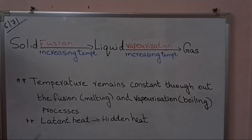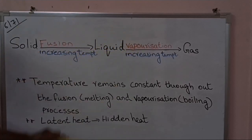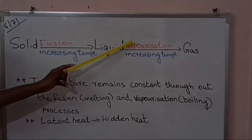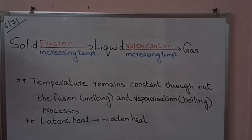That hidden heat is called latent heat. In the case of fusion, it is called latent heat of fusion, and in vaporization, it is called latent heat of vaporization. In the fusion of ice, the temperature remains constant at 0 degrees Celsius and the supplied heat is used to overcome the force of attraction between ice particles to change into water. In vaporization, the temperature remains constant at 100 degrees Celsius because the supplied heat overcomes the force of attraction between the particles of water.